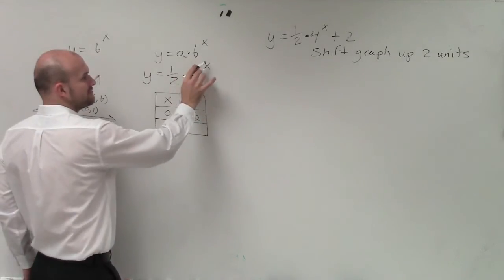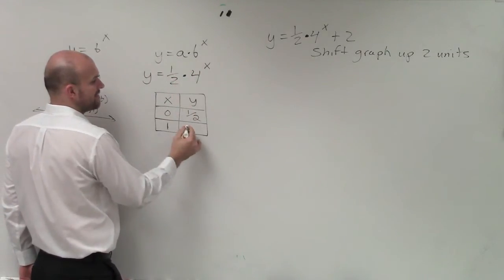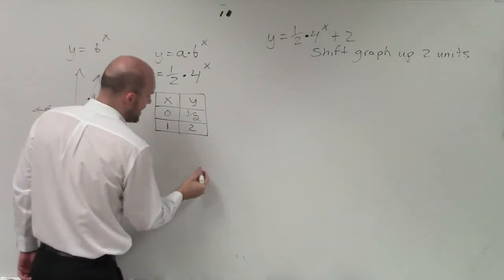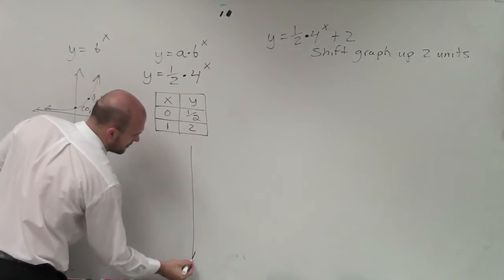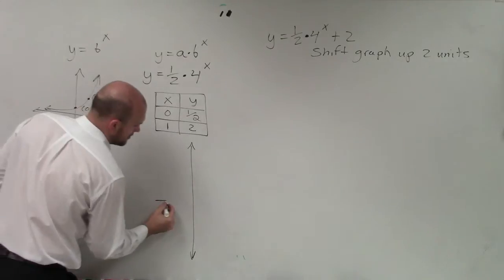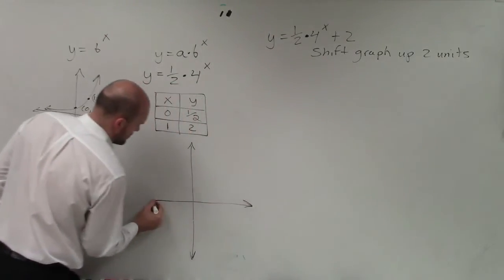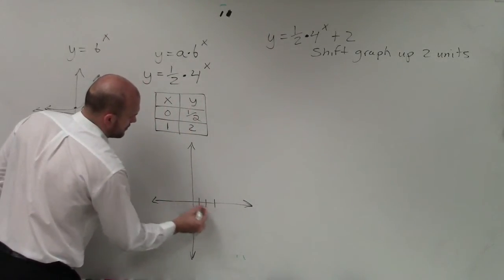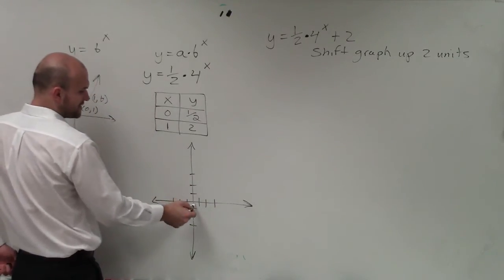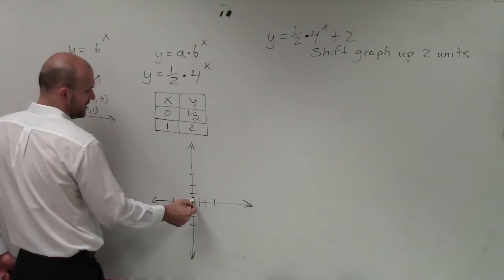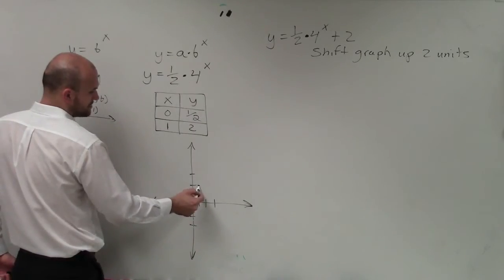And when I put in a 1, 4 to the first power is 4 times 1 half is 2. So now, go ahead and graphing this. When I go and graph this, I go 0, not to 1, but 0 to 1 half. And over 1, up 2.